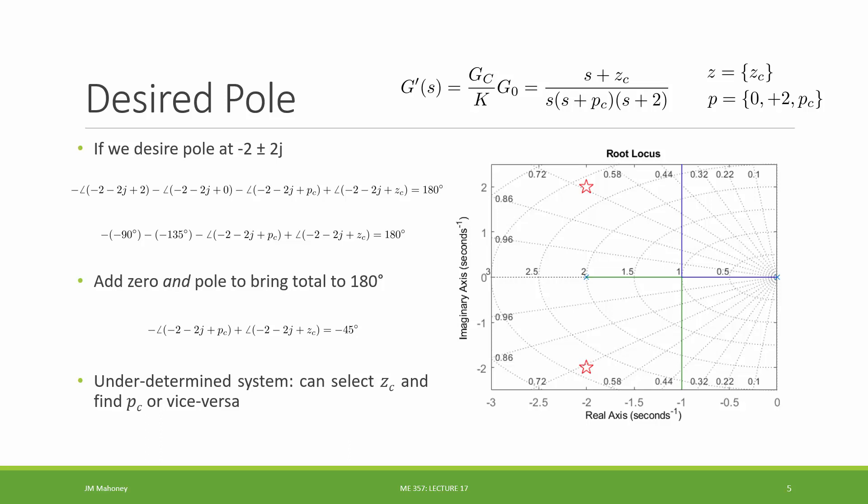I now have two unknowns and one equation. So I actually have an underdetermined system. I can select a combination of zc and pc that satisfy this. Now, it's not any choice of pc and zc, only the choices that satisfy this equation. And what we're going to see is in controllers like this where we have this extra latitude, these underdetermined systems, we have a lot more choices in the controllers we can design and the types of behavior we can see in the output.